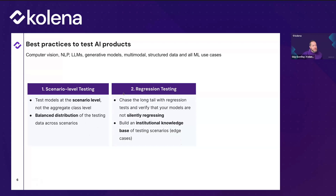After scenario-level testing, think about regression testing — catching failures in your model over time, keeping track of them, and creating tests to continually monitor for those regressions. This helps you chase the long tail, verify that models aren't silently regressing, and build up an institutional knowledge base of testing scenarios and edge cases so you're not continually surprised by recurring failure modes.